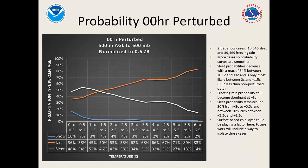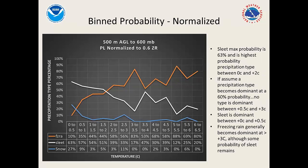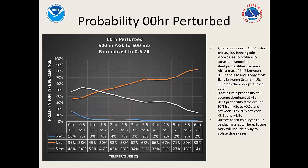We then perturbed the dataset — taking each case and perturbing it many times based on errors commonly seen in the RAP. This is the same technique Heather Reeves used in her paper to perturb soundings. The result is more cases and therefore smoother curves. Comparing the two, it's mostly a smoothing effect — the little peaks and valleys get smoothed out. With perturbation, sleet maximized at about 54% between 0 and 1°C.